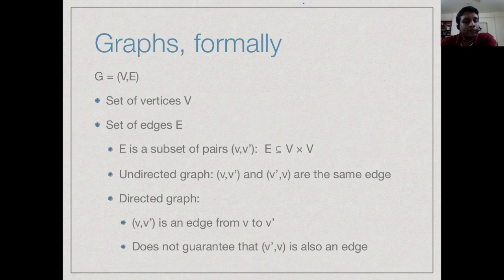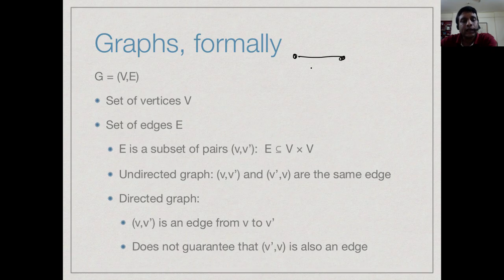Recall that a graph is a set of vertices or nodes V connected by a set of edges E. We can have two types of edges: undirected edges and directed edges. An undirected edge is drawn as just a line between two vertices, representing that V and V prime are connected. It does not matter whether we call this edge V, V prime or V prime, V — there is only one edge.